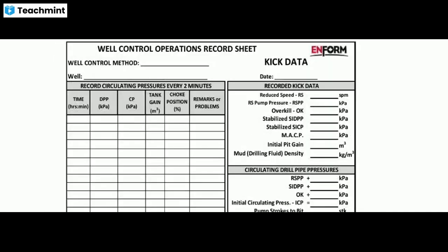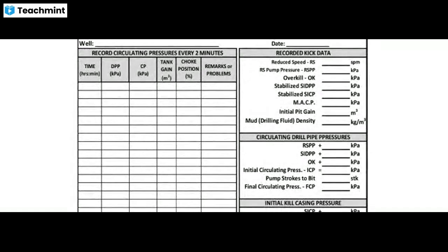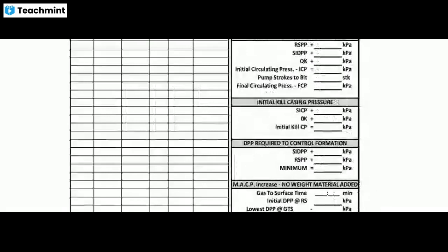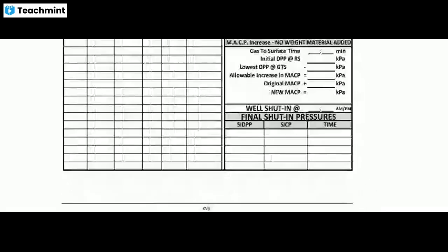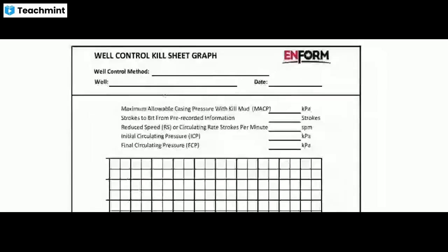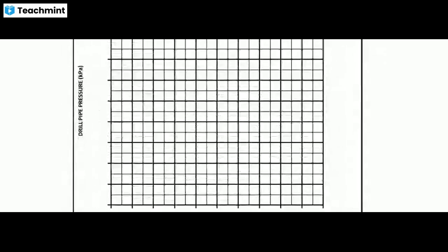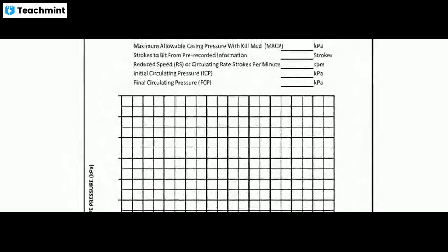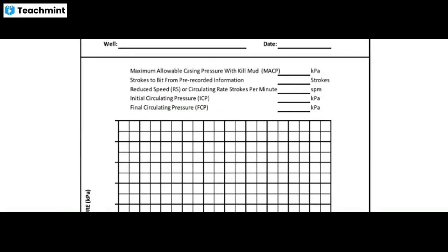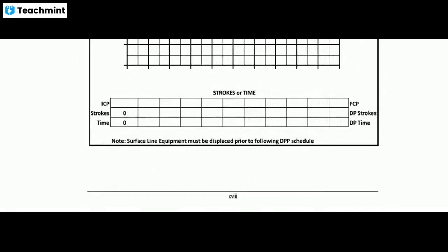This is the well control operation record sheet showing recorded kick data: circulating drill pipe pressures, RSPP, SIDPP, ICP, FCP, etc. Initial killing casing pressure SICP, initial kill DPP are recorded to control formation pressure. Final shut-in pressures — SIDPP, SICP — and time are recorded. The stroke graph on the well control sheet shows MACP — maximum allowable casing pressure — with kill mud, along with strokes to bit from pre-recorded information, reduced speed ICP, FCP, final circulating pressure, and strokes.